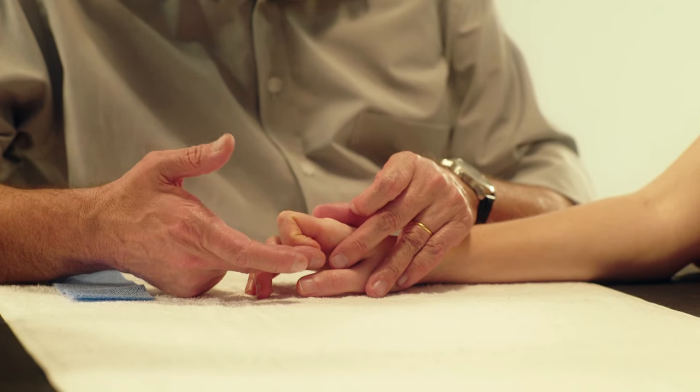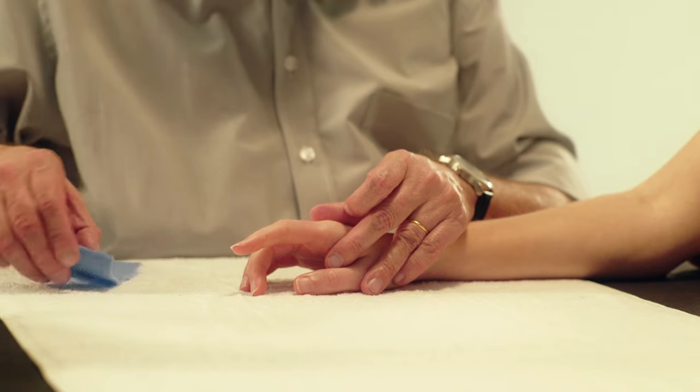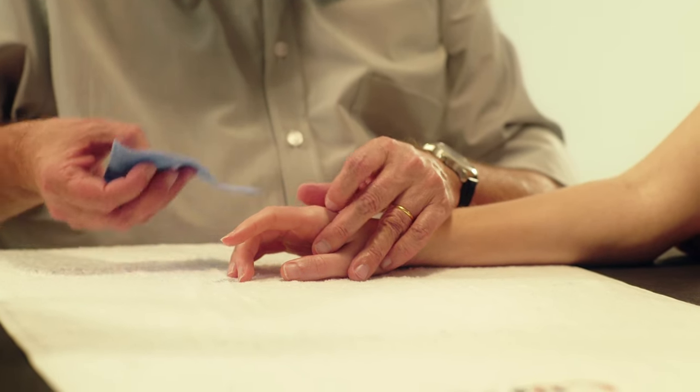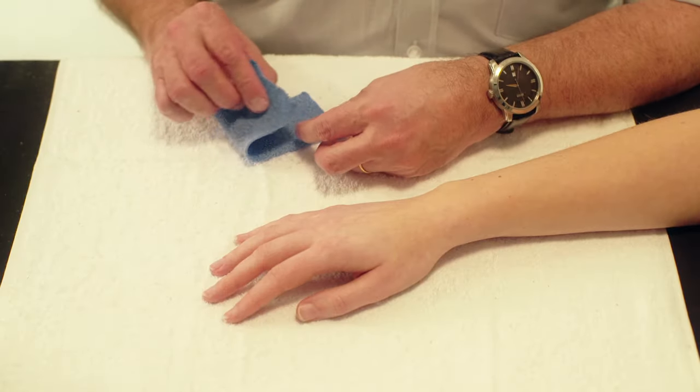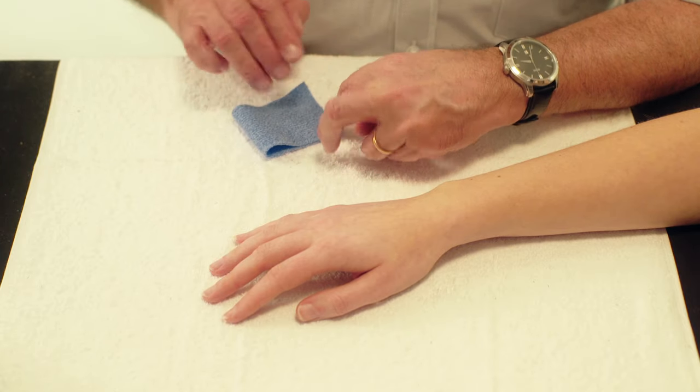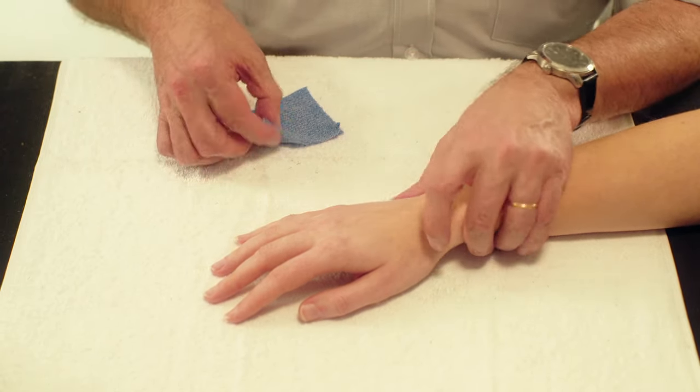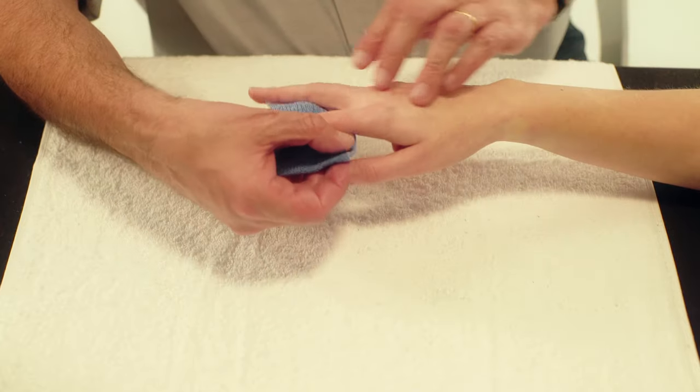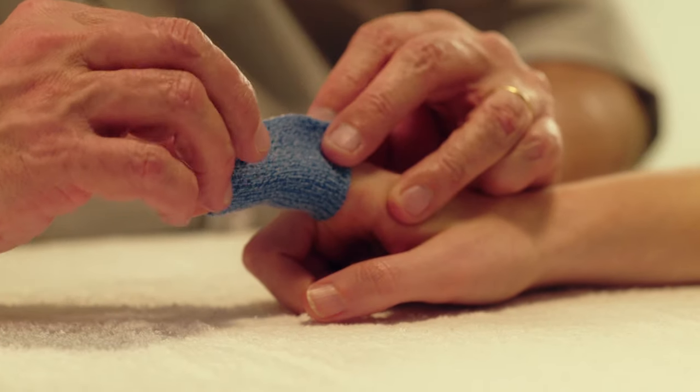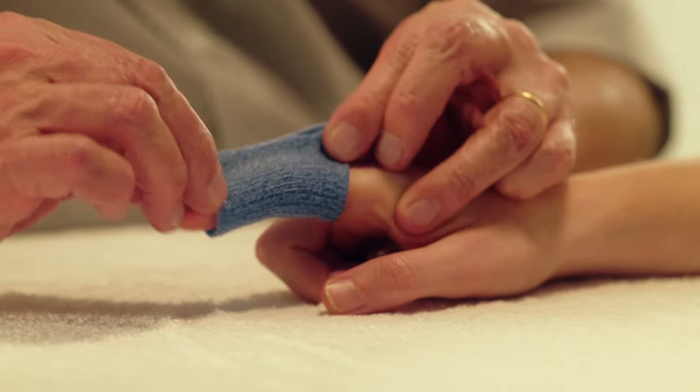Use a strip of orthicast six centimeters wide and 10 to 12 centimeters long. Fold the piece in half. Place the orthicast on the palmar surface of the finger and pinch together on the dorsal surface.